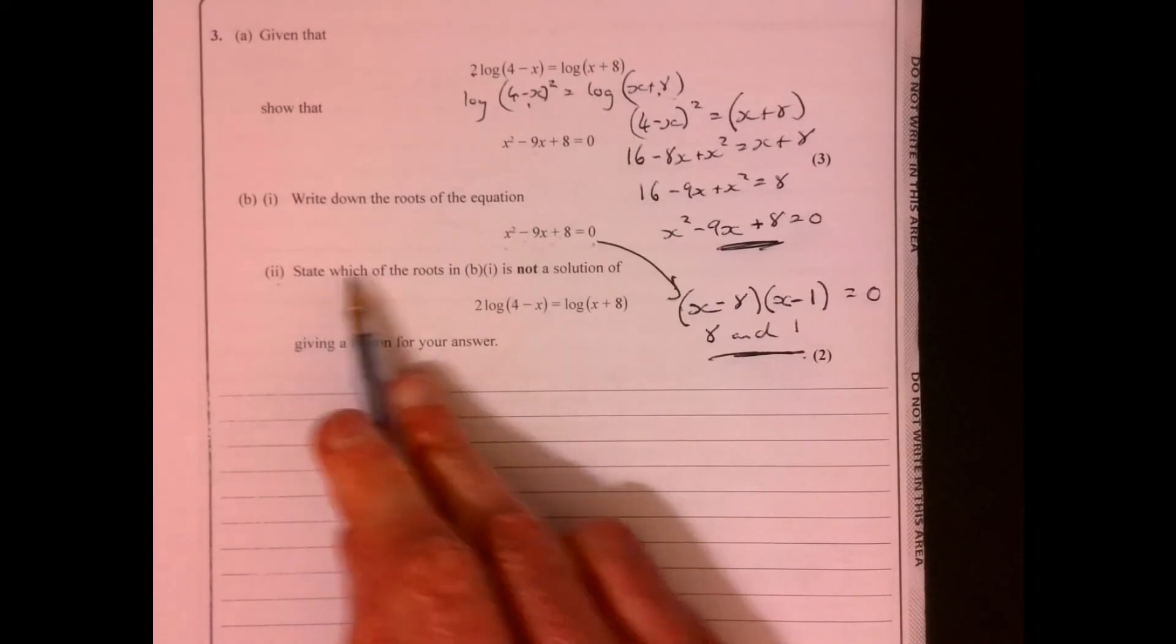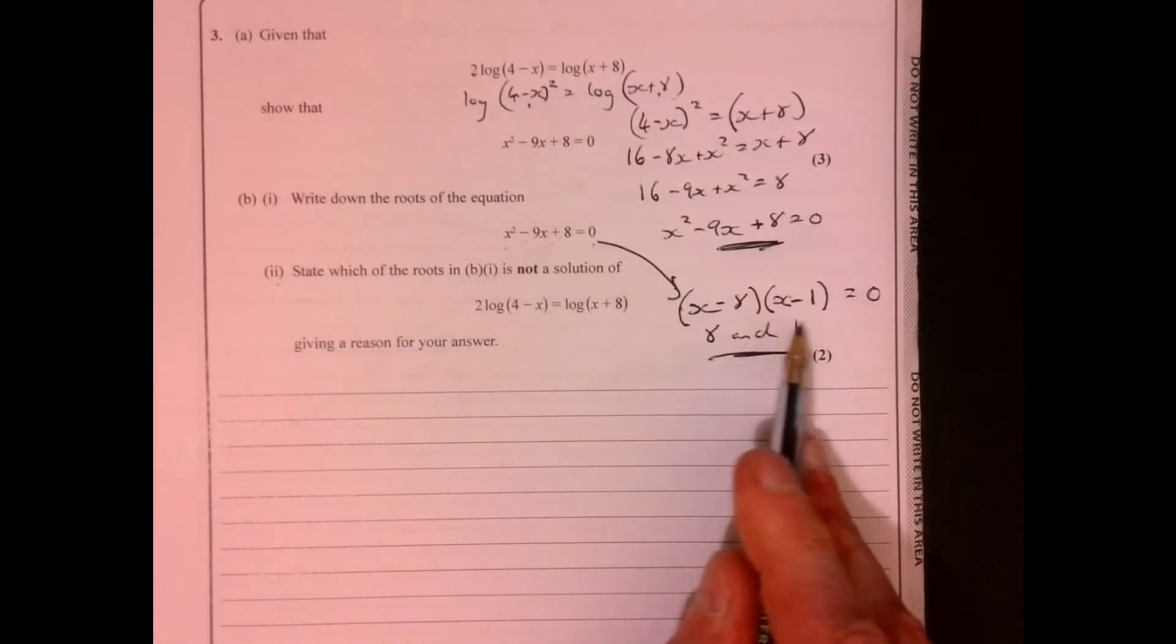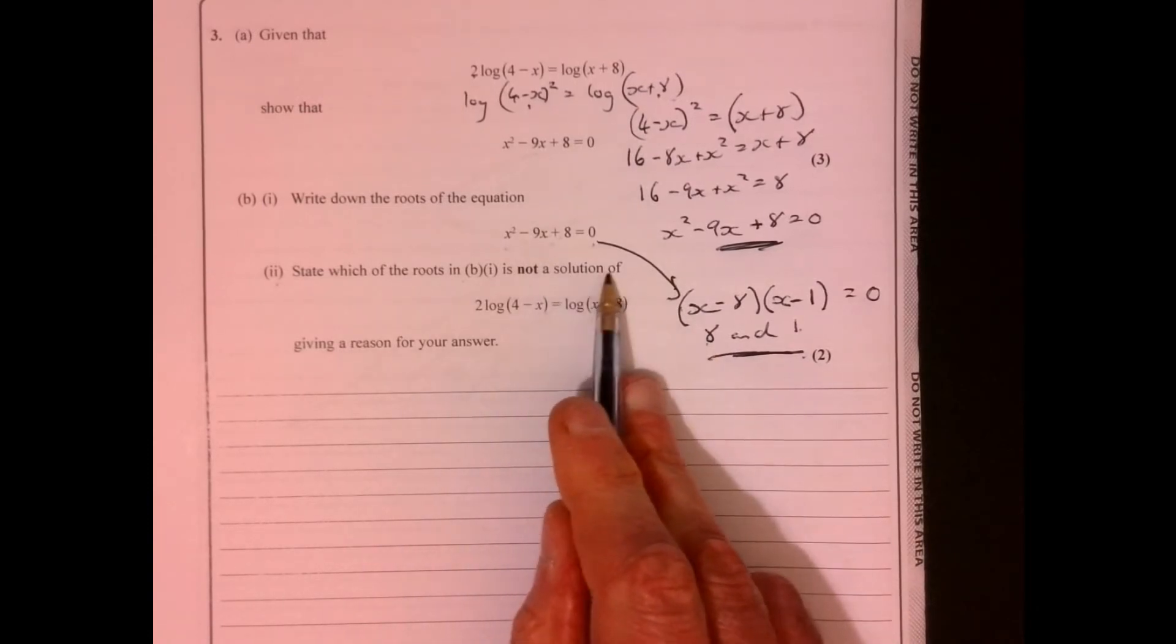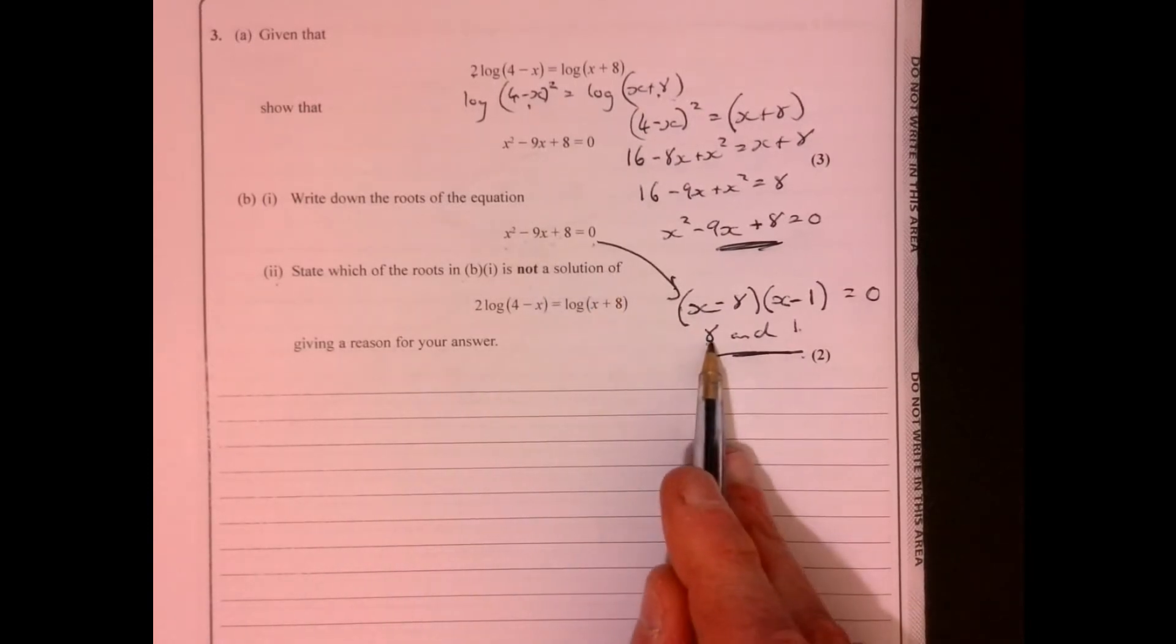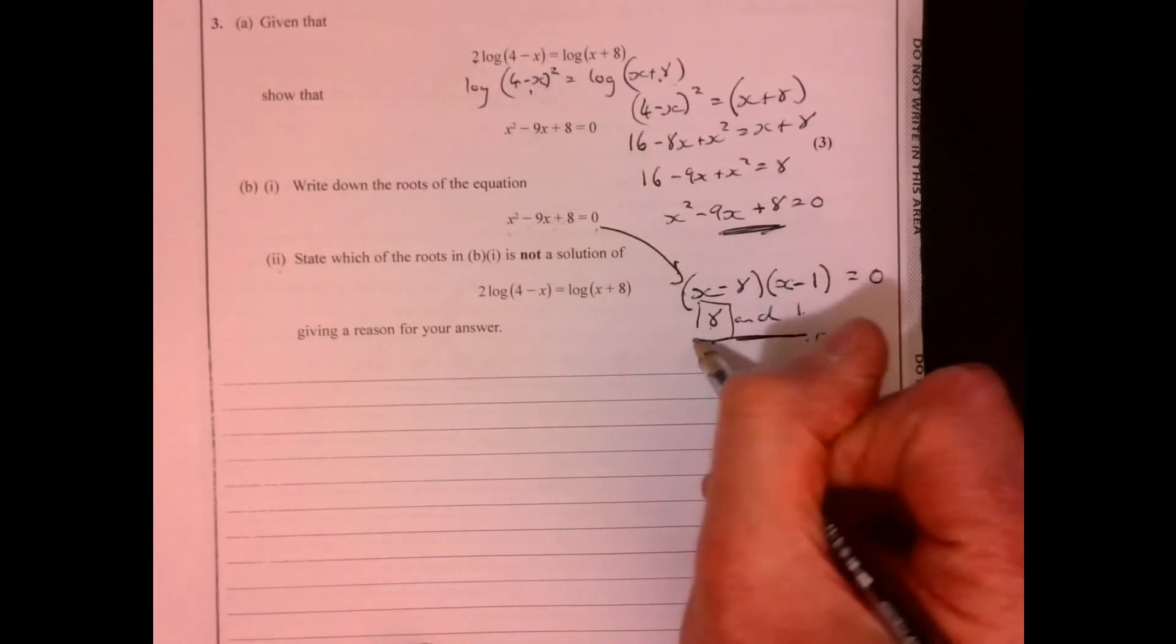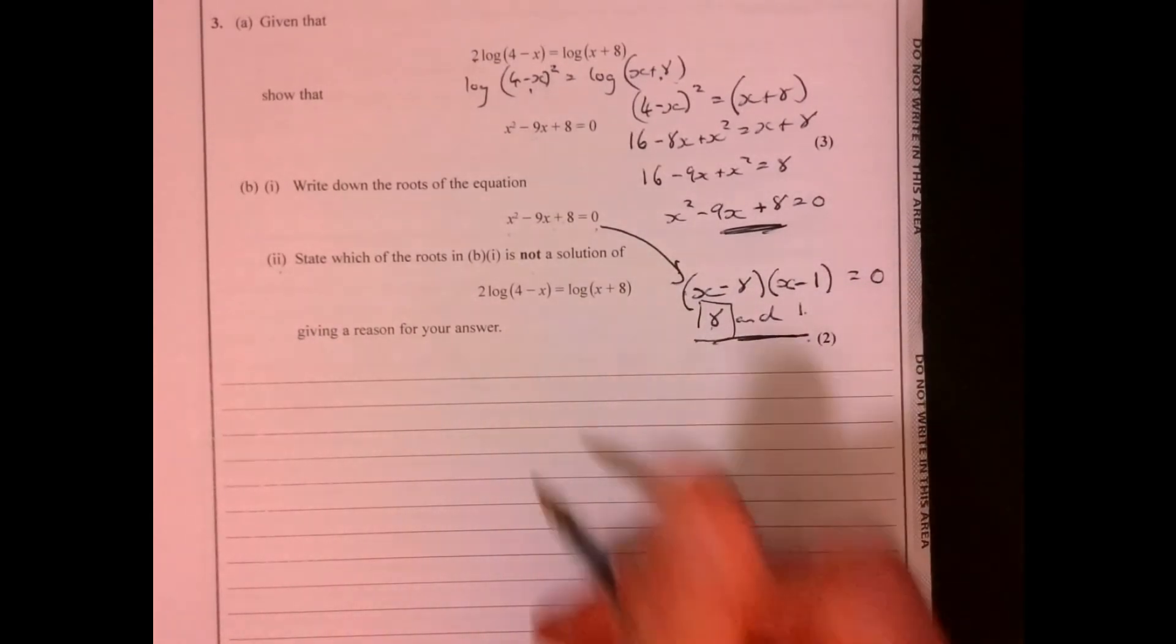And then part two says state which of the roots here, this 8 and 1, is not a solution. So let's just have a little think about which one won't work. So hopefully you've spotted it. Which one's not going to work? Well, the 8's not going to work, is it?